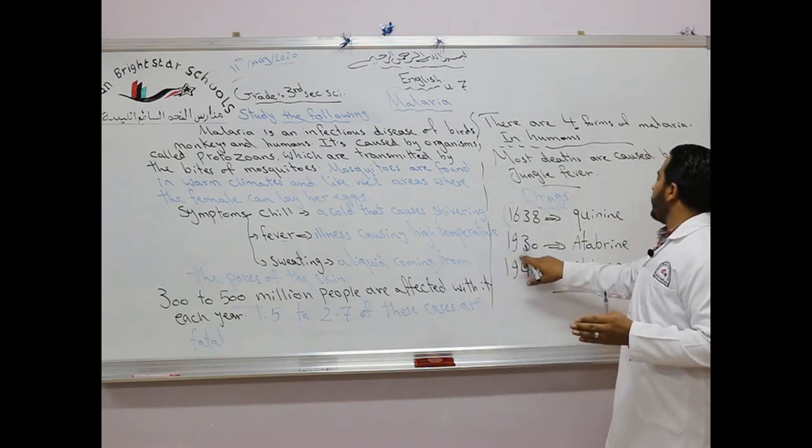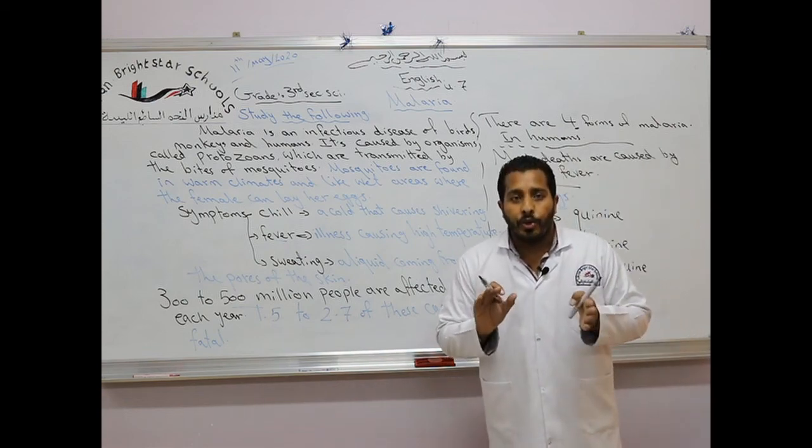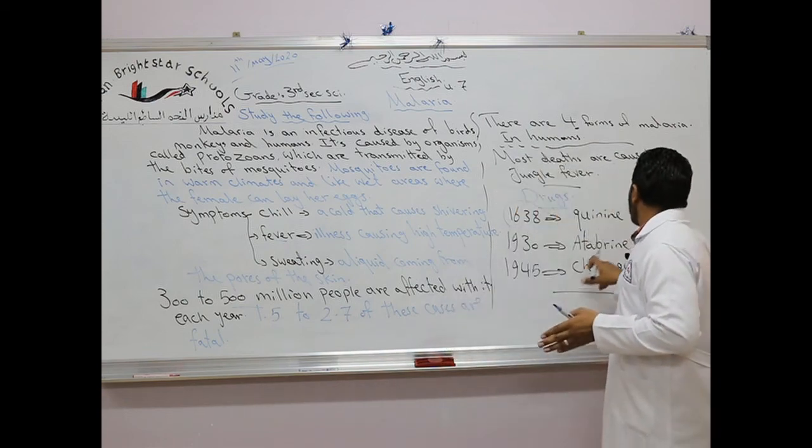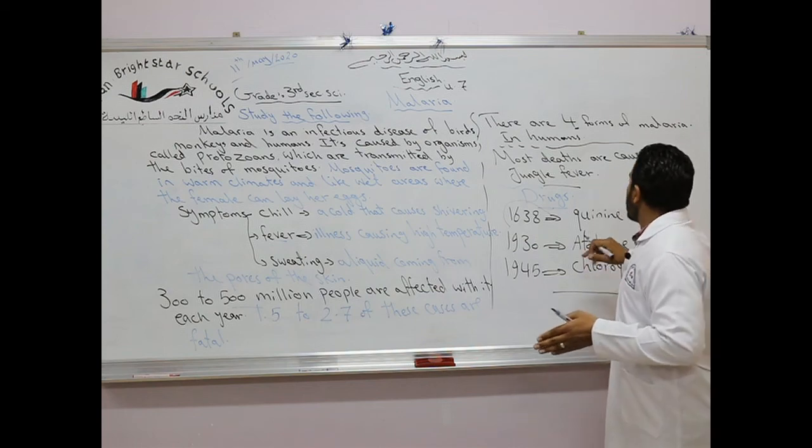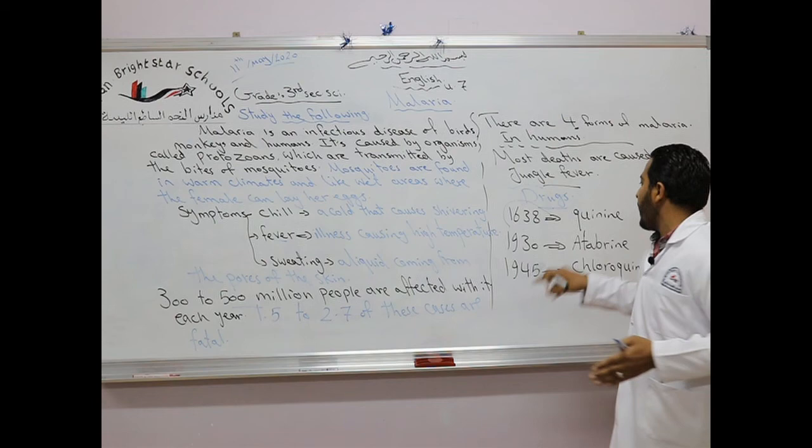But in 1930, a German chemist produced a new drug called atabrine. It was more effective and less toxic than quinine.